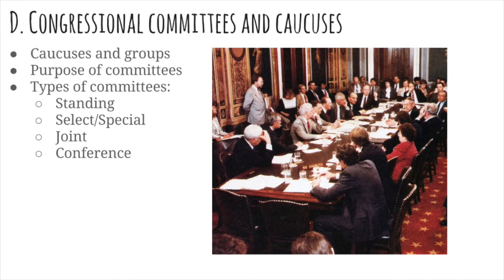Congress also forms things called caucuses, which are internal groups of like-minded members of the House and the Senate. For example, the Tea Party Caucus, sometimes called the Freedom Caucus, consists of like-minded conservatives. There's also the Congressional Black Caucus, which has African-American members of Congress. Caucuses generally bring together members of Congress who share certain attributes to discuss potential legislation that could affect their interests.